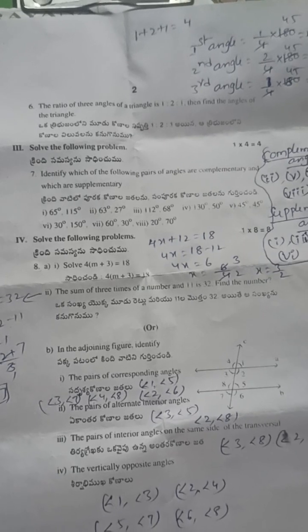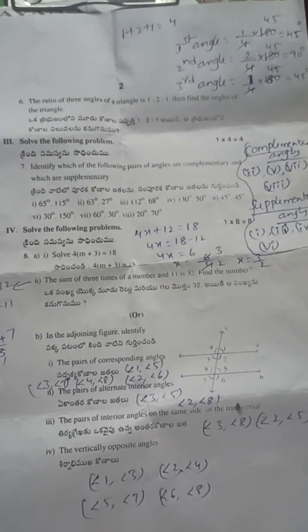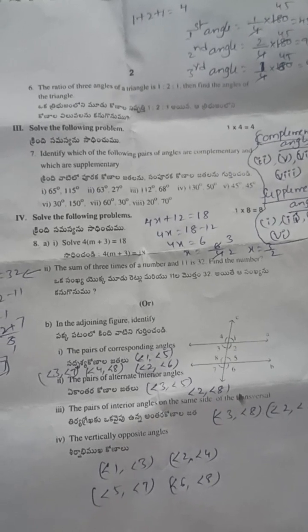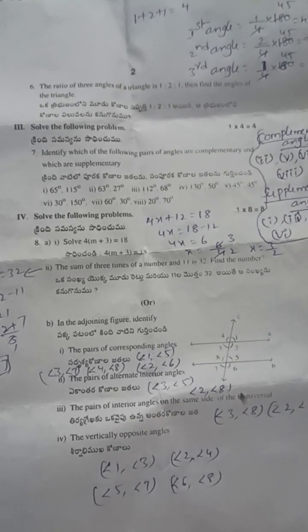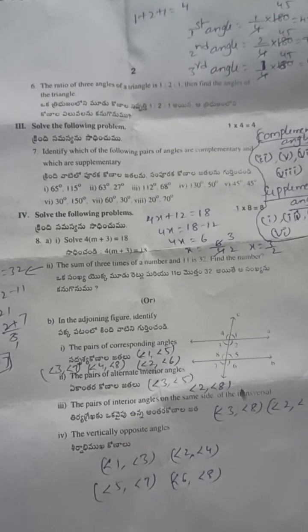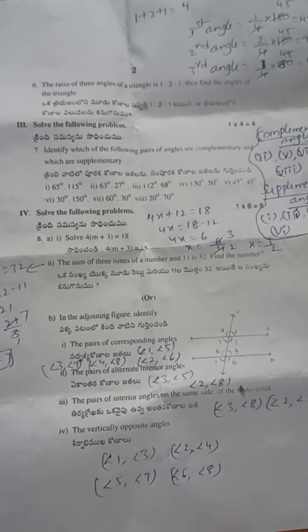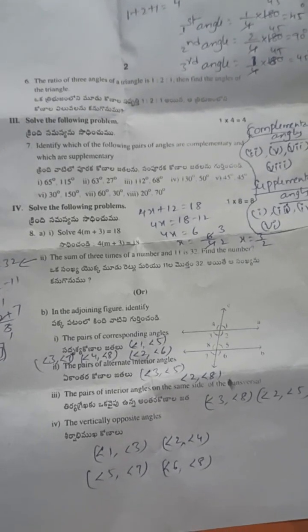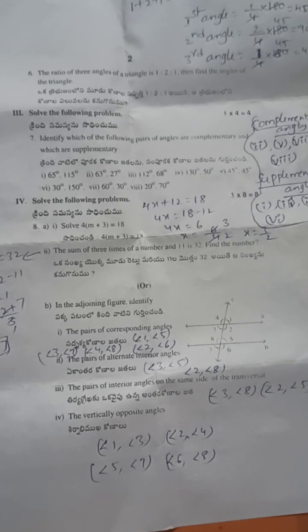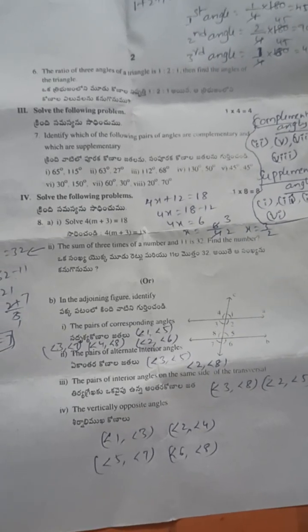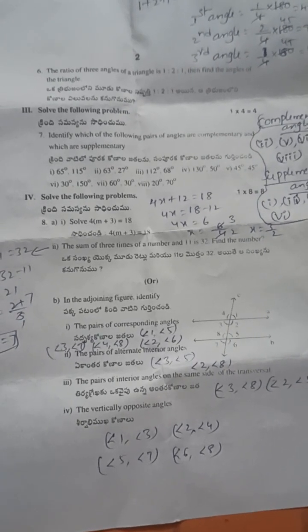Next, identify which of the following angles are complementary. Complementary means sum is 90, supplementary means sum is 180. Here the complementary angles are: 63 and 27, 45 and 45, 60 and 30, 20 and 70. Supplementary angles are: 65 and 115, 112 and 68, 130 and 50, 30 and 150.